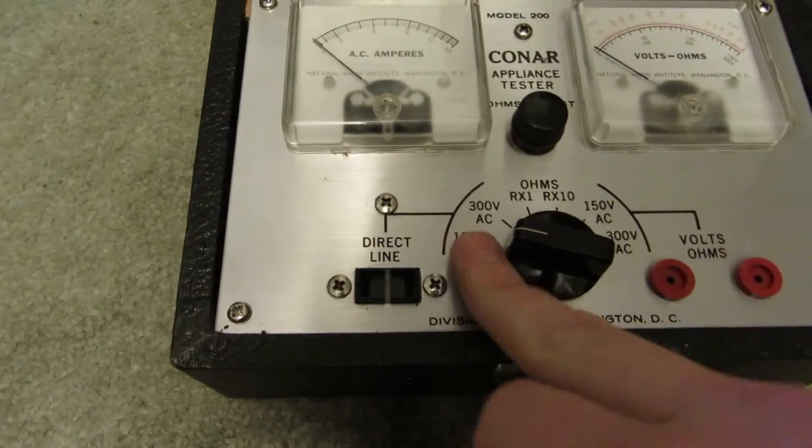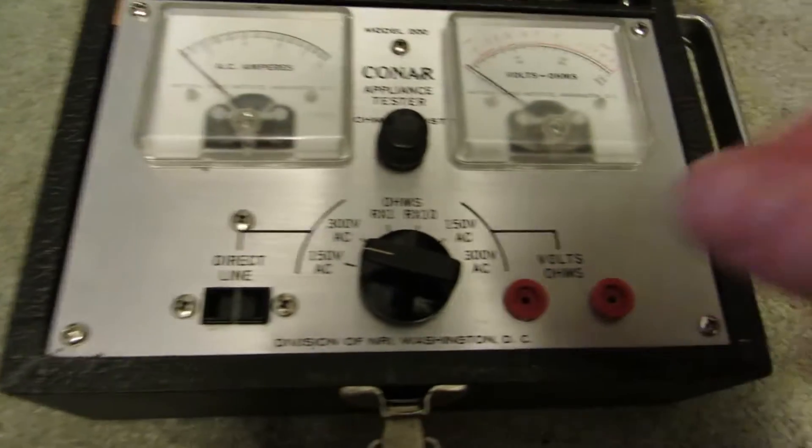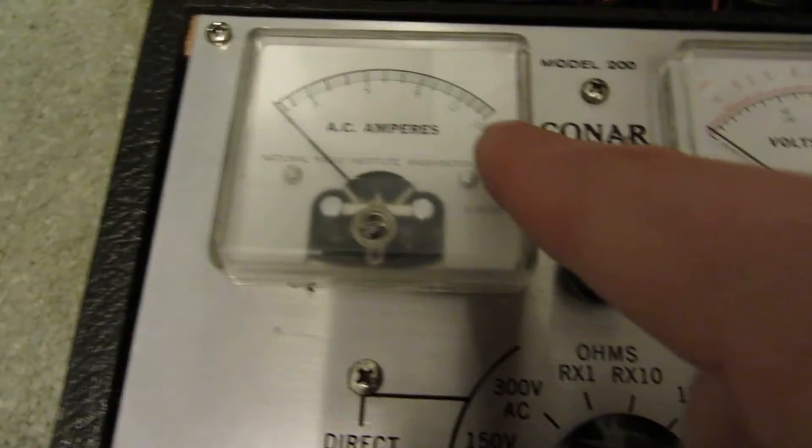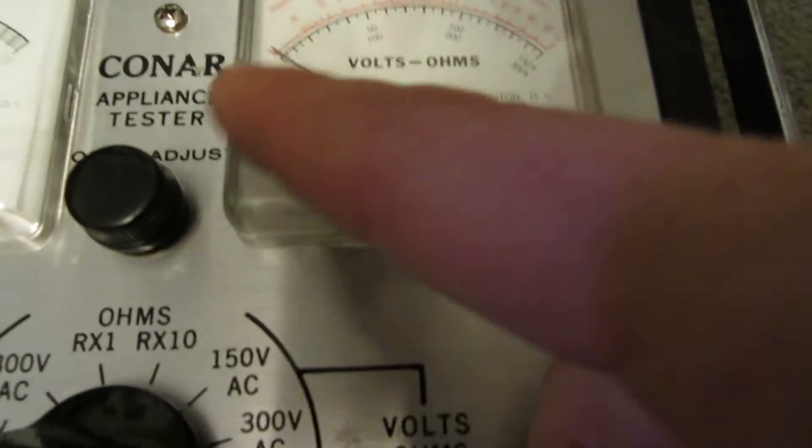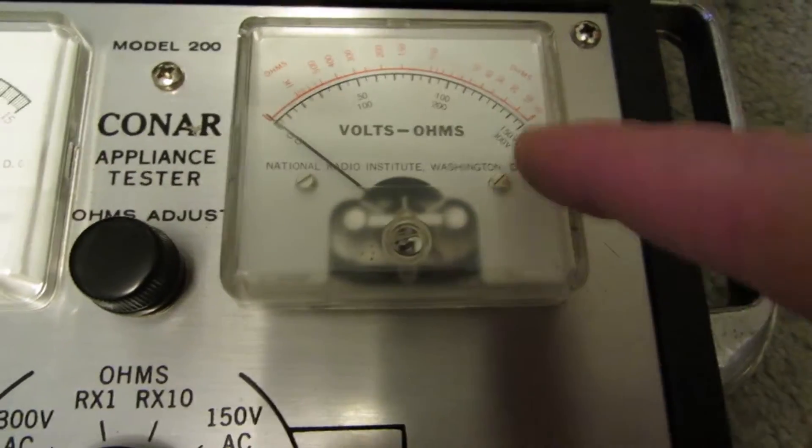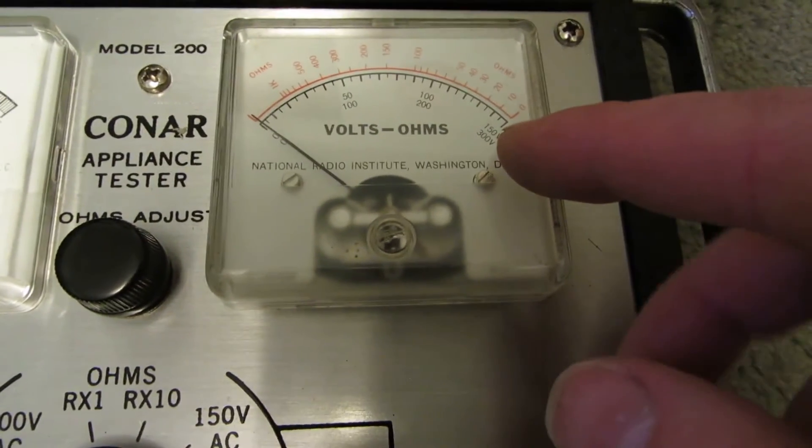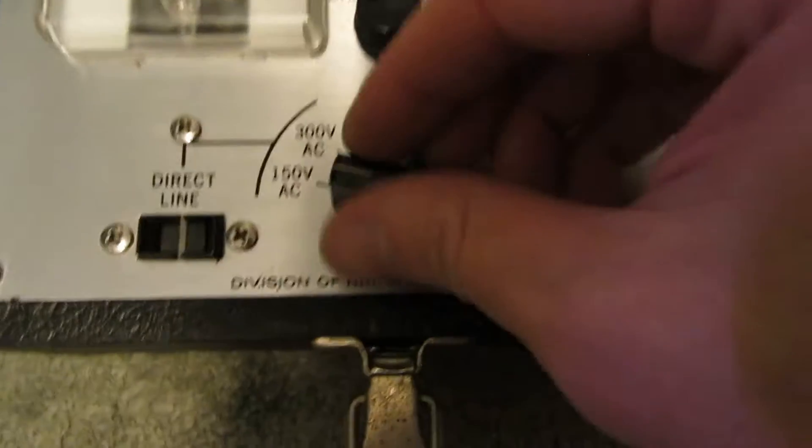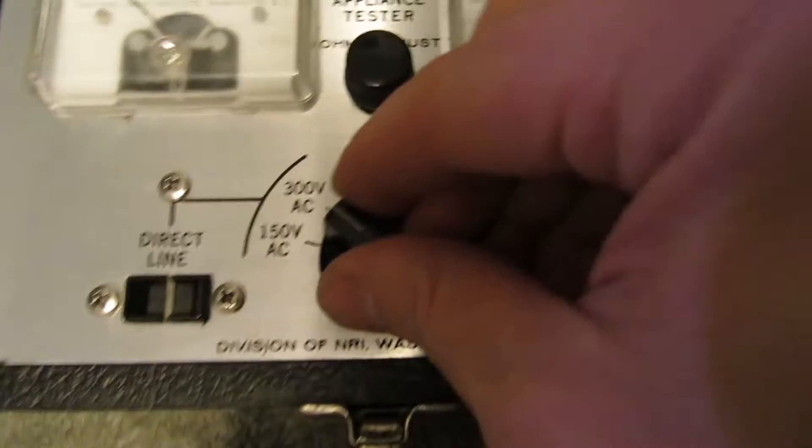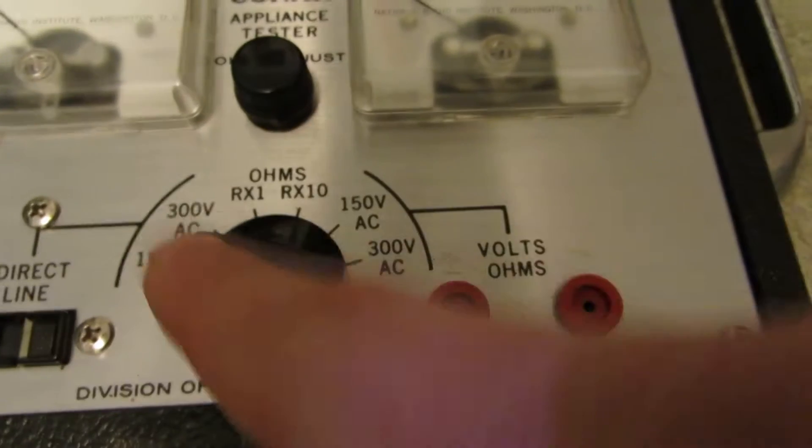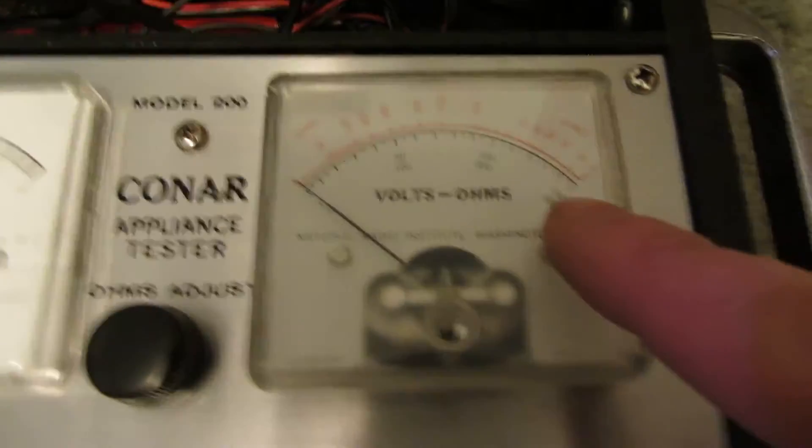So it's kind of like a basic multimeter in a way. So you've got your AC amps from 0 all the way up to 15, and then you've got your volts and your ohms. Two ranges, so you've got 150 and up to 300. So that's on the bottom. Then you've got your ohms, which is on the top.